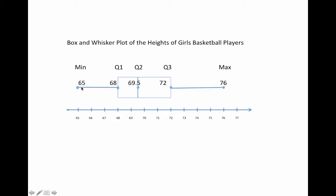Then you plot each of the five numbers of the five-number summary with a dot above the number line. You label them as min, Q1, Q2, Q3, and max.